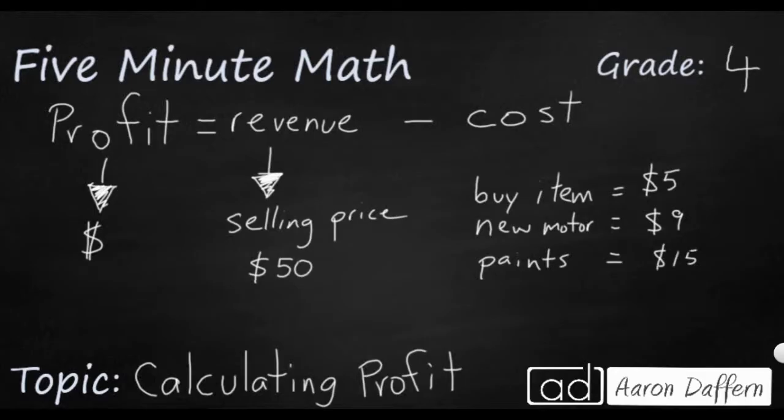So now let's see how much it actually cost you to get that item up so that it was ready for sale. So if we want to add this up, we've got $5 and $9. That's going to be $19. That's, it cost you $29. $5 for buying it, $9 for the new motor, and then $15 for the paint. That's the cost. So if we want to figure out what our profit is, we need to calculate $50 minus $29.